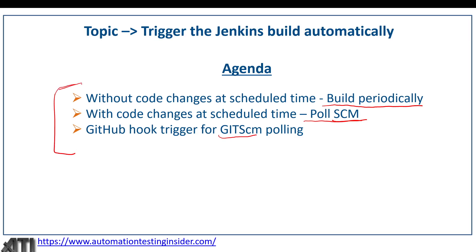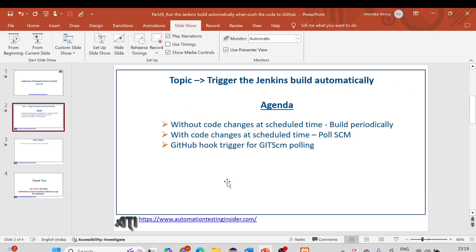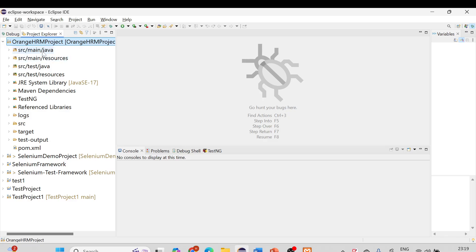The first two options are relatively easy, so I'll explain how to set them up in Jenkins. For the third option, I'll demonstrate it practically because it requires a bit more work. So let's have a look at all these options in Jenkins. This is the project in Eclipse — the OrangeHRM project — which we are working on.